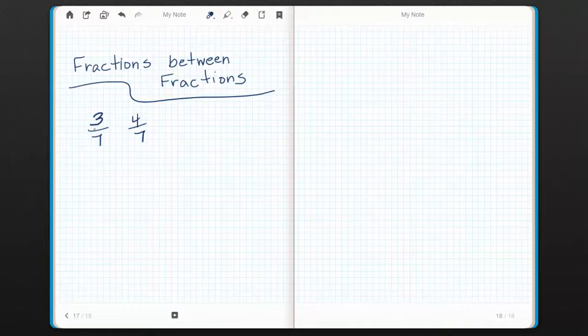Kind of hard to tell what fraction would be between them because 3/7ths and 4/7ths are sequential. Let's expand the denominator. Make it a bigger number.